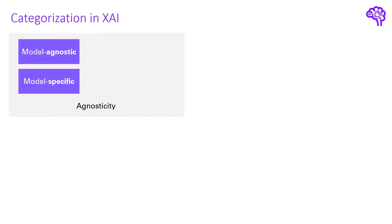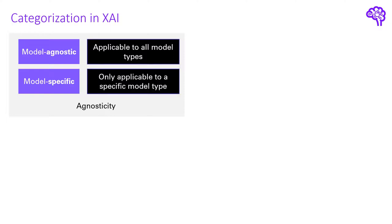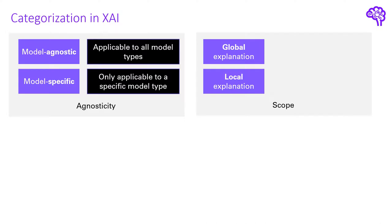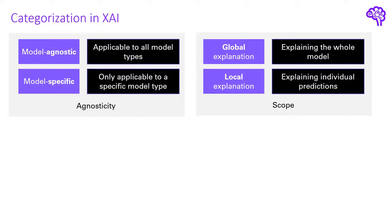Let's quickly talk about the terminology used in this research field. The different types of methods can be distinguished according to a couple of properties. First of all we can differentiate between model agnostic and model specific Explainable AI methods. Model agnostic means the Explainable AI algorithm can be applied on any kind of model — random forest, neural network, or support vector machine. Model specific on the other hand means the method was designed for a specific type of model such as only for neural networks. Regarding the scope of the provided explanations we can categorize methods into global and local approaches, referring to either explaining the whole model or just individual predictions.